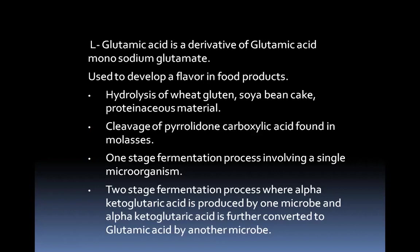The most important derivative of glutamic acid is monosodium glutamate, used in the development of flavor in food products. It is produced by hydrolysis of wheat gluten, soybean cake, or other proteinaceous materials, or by cleavage of pyrrolidone carboxylic acid in molasses. It can be produced by a one-stage fermentation process involving a single microorganism, or by a two-stage fermentation where alpha-ketoglutaric acid is produced by one microbe and converted to glutamic acid by another. Corynebacterium glutamicum is mainly used for the one-stage fermentation process.